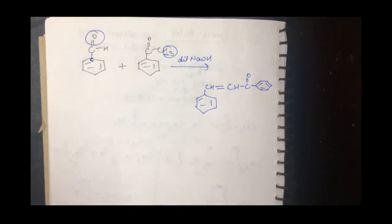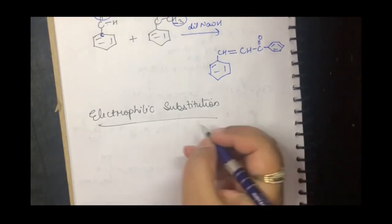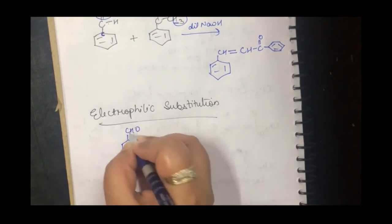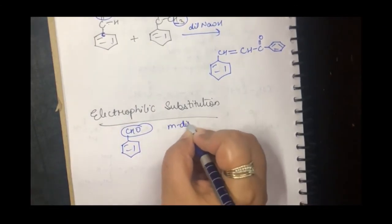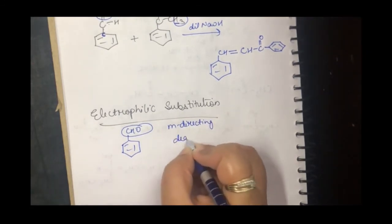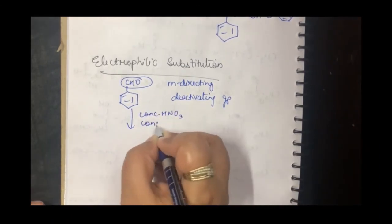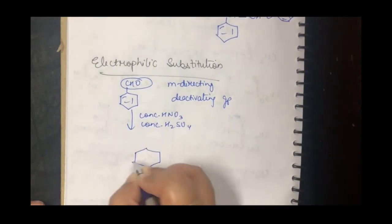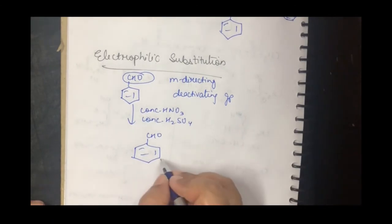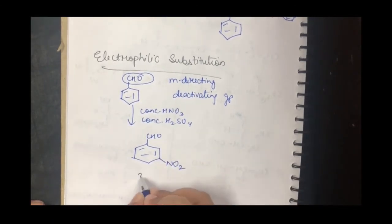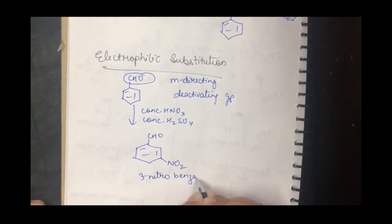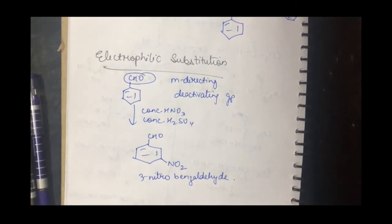Regarding electrophilic substitution on aromatic aldehydes: the aldehyde group (CHO) is an electron-withdrawing group and a meta-director because it is a deactivating group. So if we carry out electrophilic nitration, the incoming electrophile NO₂ goes to the meta position. This gives 3-nitrobenzaldehyde. Whenever you do electrophilic substitution on an aromatic aldehyde, the incoming group always goes to the meta position.